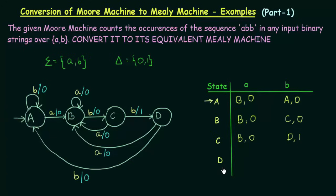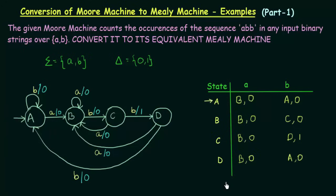Come to state D. D on small a goes to state B giving output 0. On small b, D goes to state A giving output 0. Now we have the transition table for our Mealy machine.